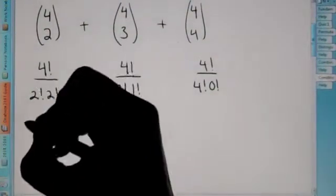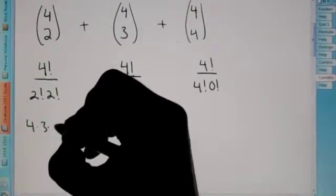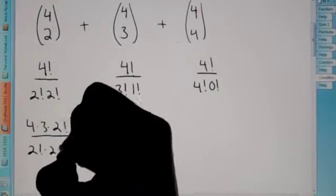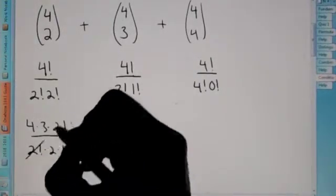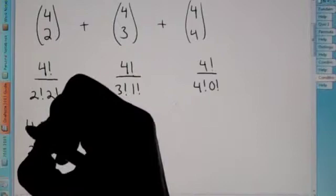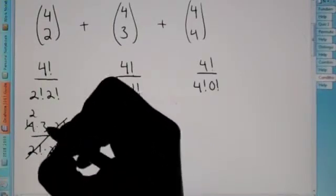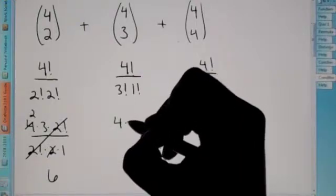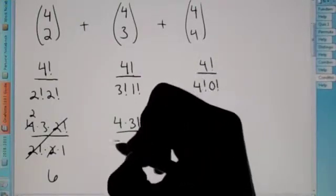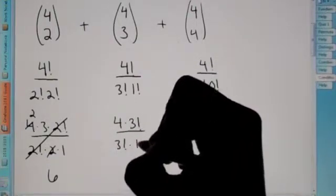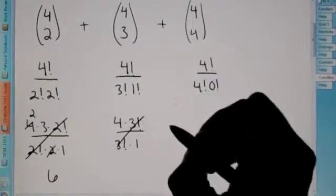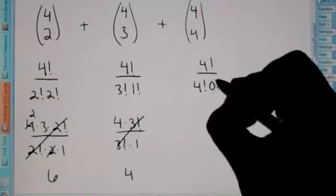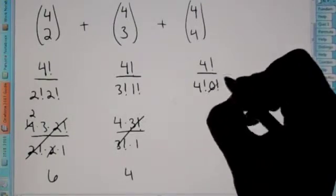So here, we're going to rewrite four times three times two factorial. We're just simplifying this. Here, the two factorials cancel out. The two and the four reduce. Two times three, we're left with six here. We're going to rewrite this four times three factorial. The three factorials cancel out. You have four over one, which is four. And lastly, zero factorial is equal to one.